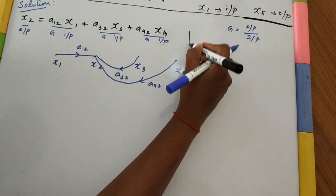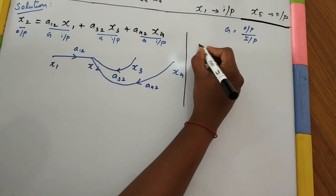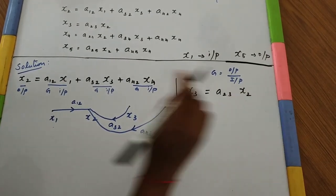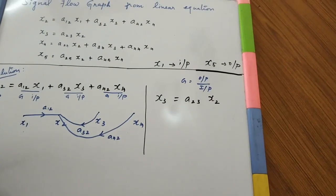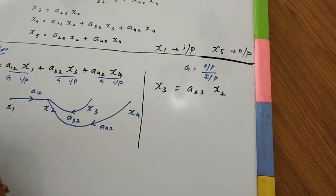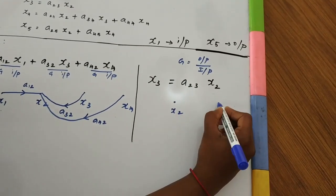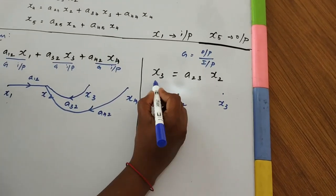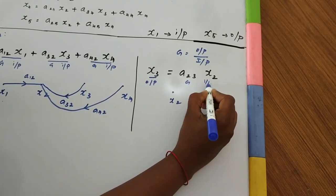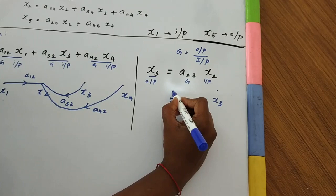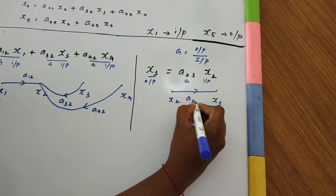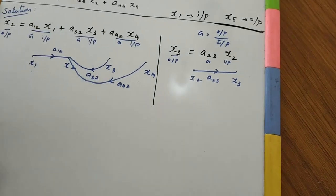Now let us do this for equation 2. Equation 2 is: X3 is equivalent to A23·X2. In this equation, we have only two nodes: X2 node and X3 node. This is output equals gain into input, meaning from X2 node to X3 node, we draw the signal flow graph with a gain value A23. These two equations are now done.